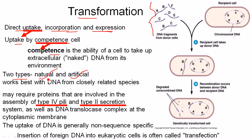Natural transformation occurs in the natural environment and does not have any human interference. But in artificial transformation, we do it for our own purpose in the laboratory. Transformation works based on DNA that are from closely related species.